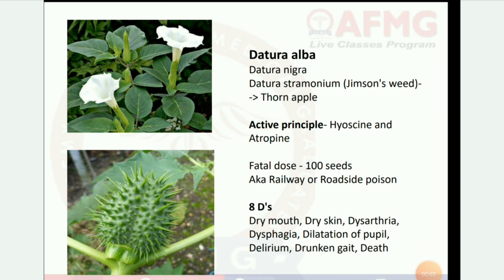Next poisoning: Datura alba, Datura nigra, and Datura stramonium — Jimson's weed, thorn apple. Active principle: hyoscine and atropine. Fatal dose: 100 seeds. Also known as railway or roadside poison. Symptoms are the eight D's: dry mouth, dry skin, dysarthria, dysphagia, dilatation of pupils, delirium, drunken gait, and death.